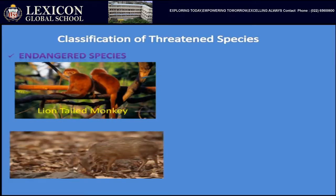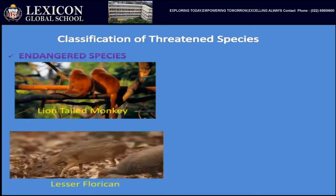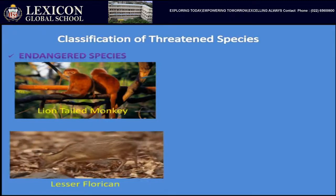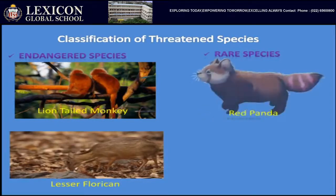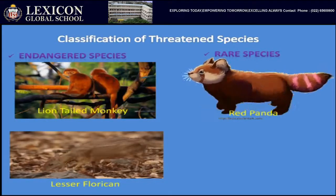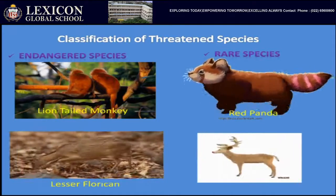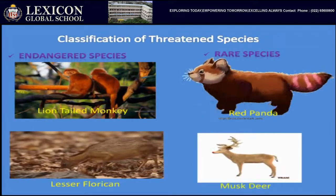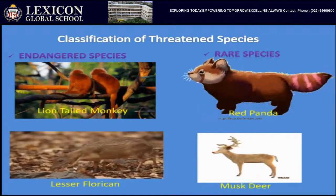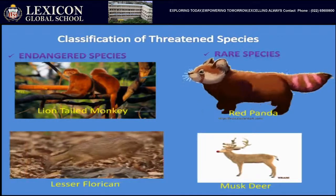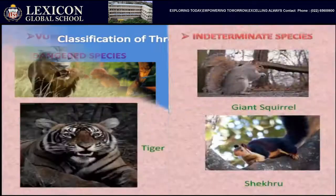The next classification is rare species — considerably declined numbers of these endemic organisms may become extinct very fast. Examples are the red panda and musk deer. So: endangered species include the lion-tailed monkey and lesser florican; rare species include the red panda and musk deer.